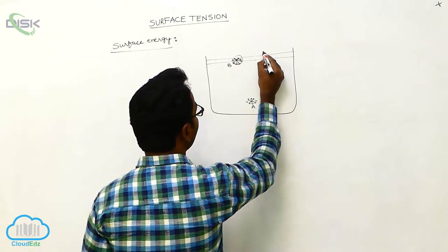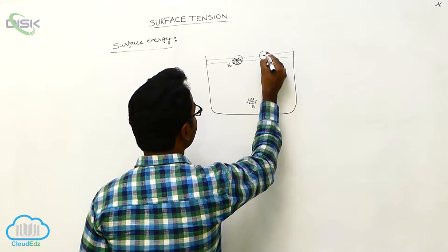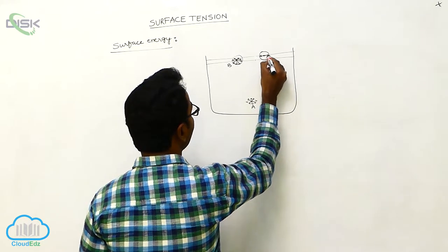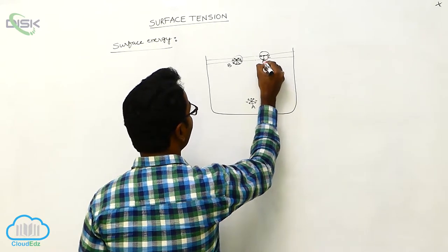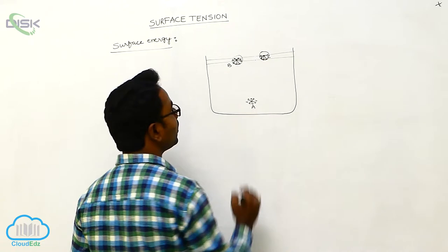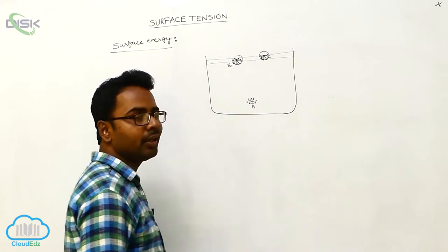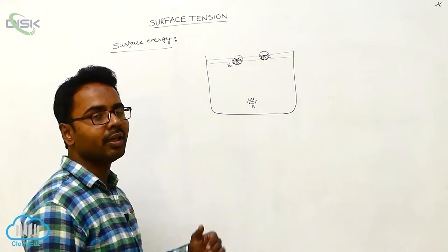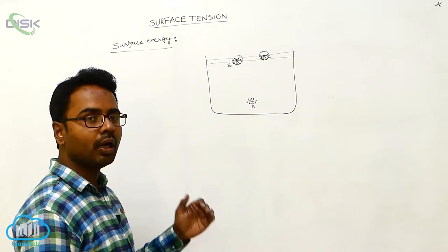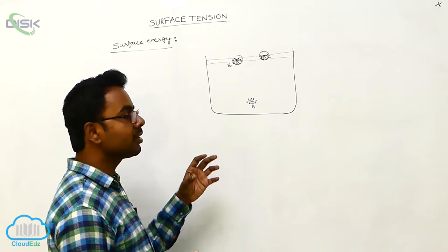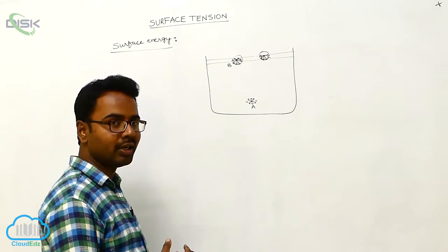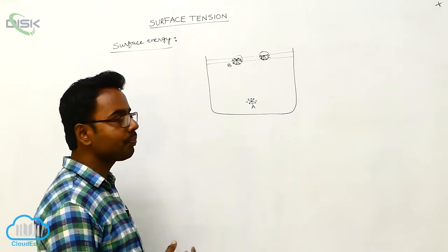For molecule C, the upper half is empty and the lower half is full of molecules. So molecule C does not experience any upward force — it experiences only a downward force. Therefore, molecule C also experiences a resultant downward force.